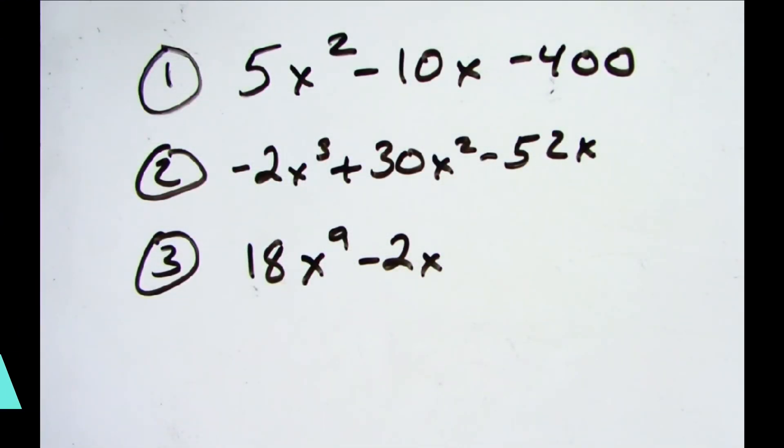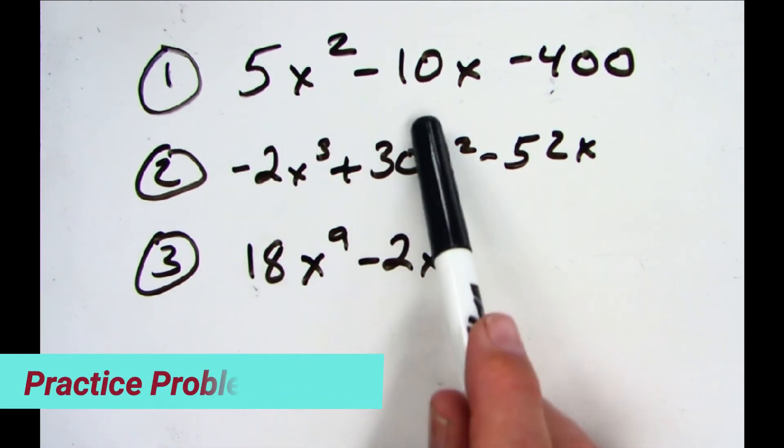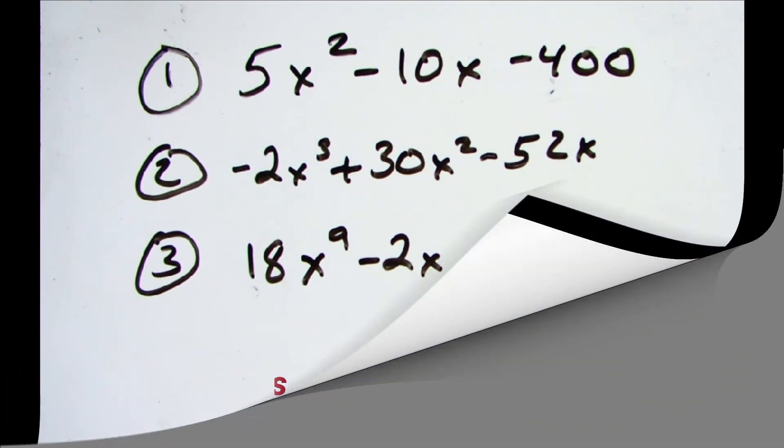Here's our practice problems. The first one is 5x² - 10x - 400. The second one is -2x³ + 3x² - 52x. Problem 3: 18x⁹ - 2x. Spoiler alert: each one has the greatest common factor you have to take out before doing the rest of the problem. Good luck.